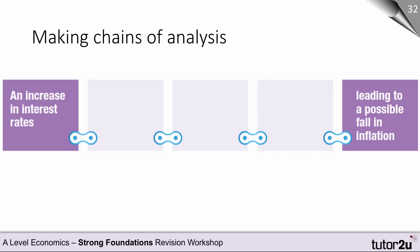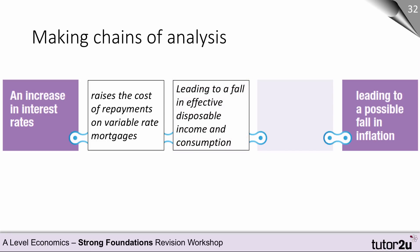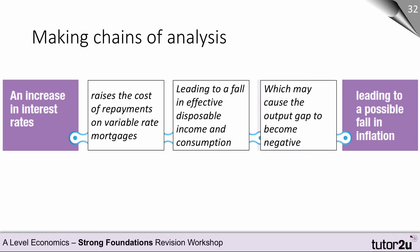So how do we build a chain of analysis? Let's take our example: an increase in interest rates can possibly cause a fall in inflation. What kind of elements could be put into the linking of this chain? An increase in interest rates raises the cost of mortgage repayments on variable rates. This leads to a fall in effective disposable income and consumption. And this fall in effective disposable income and consumption may cause the output gap to become negative, leading to a possible fall in inflation. Here we have a chain of analysis — instead of just saying an increase in interest rates leads to a fall in inflation, we put three elements into the chain.